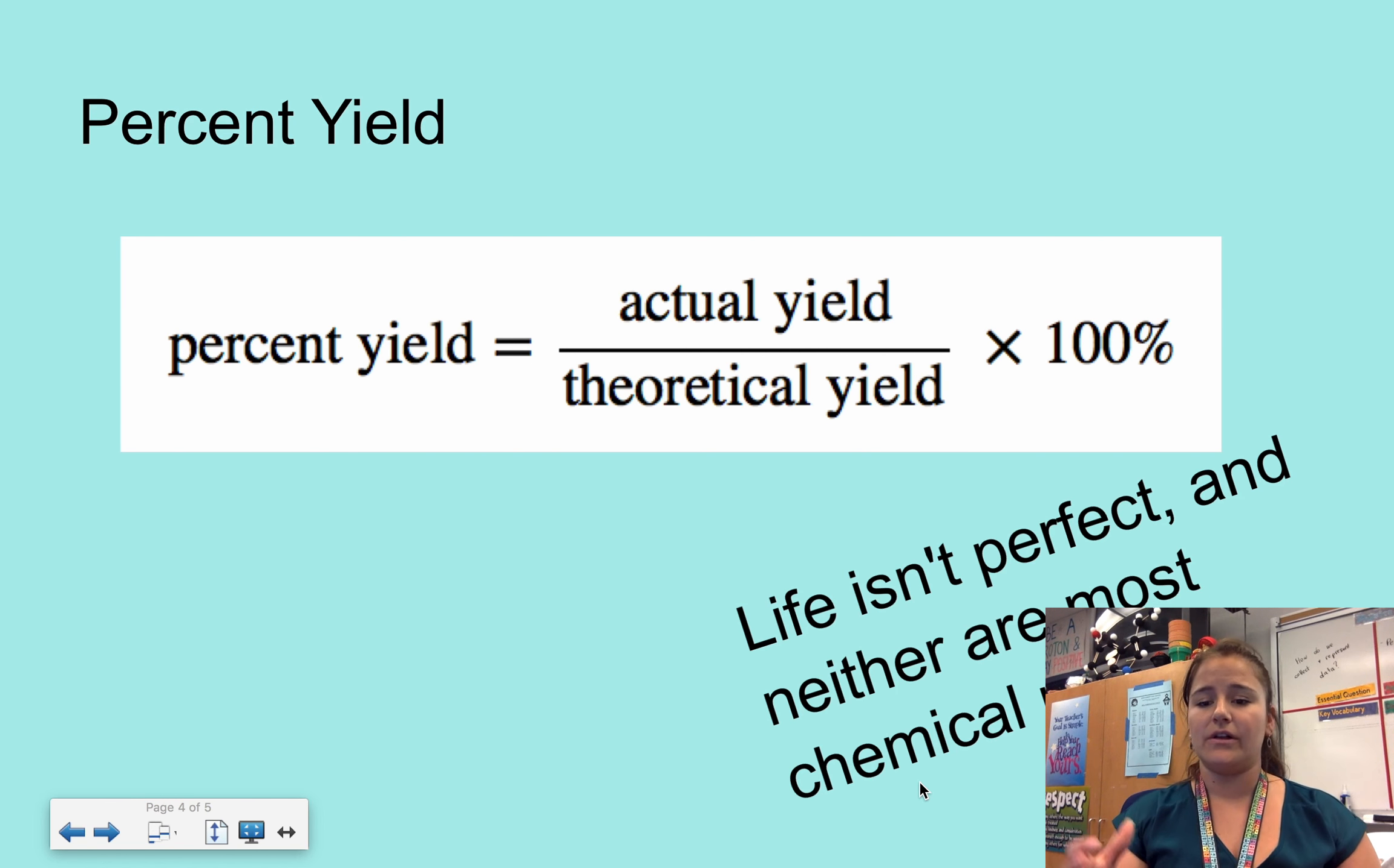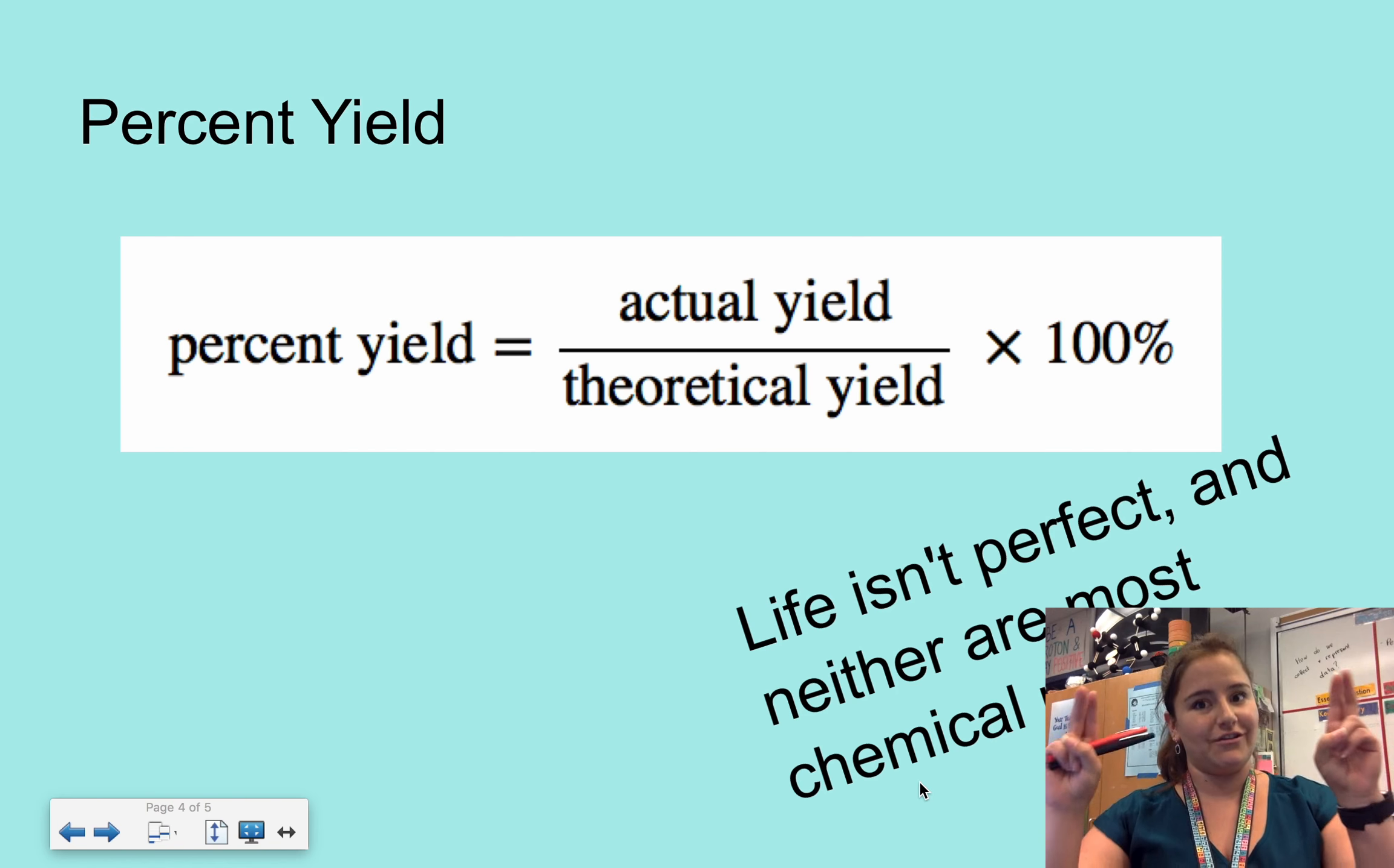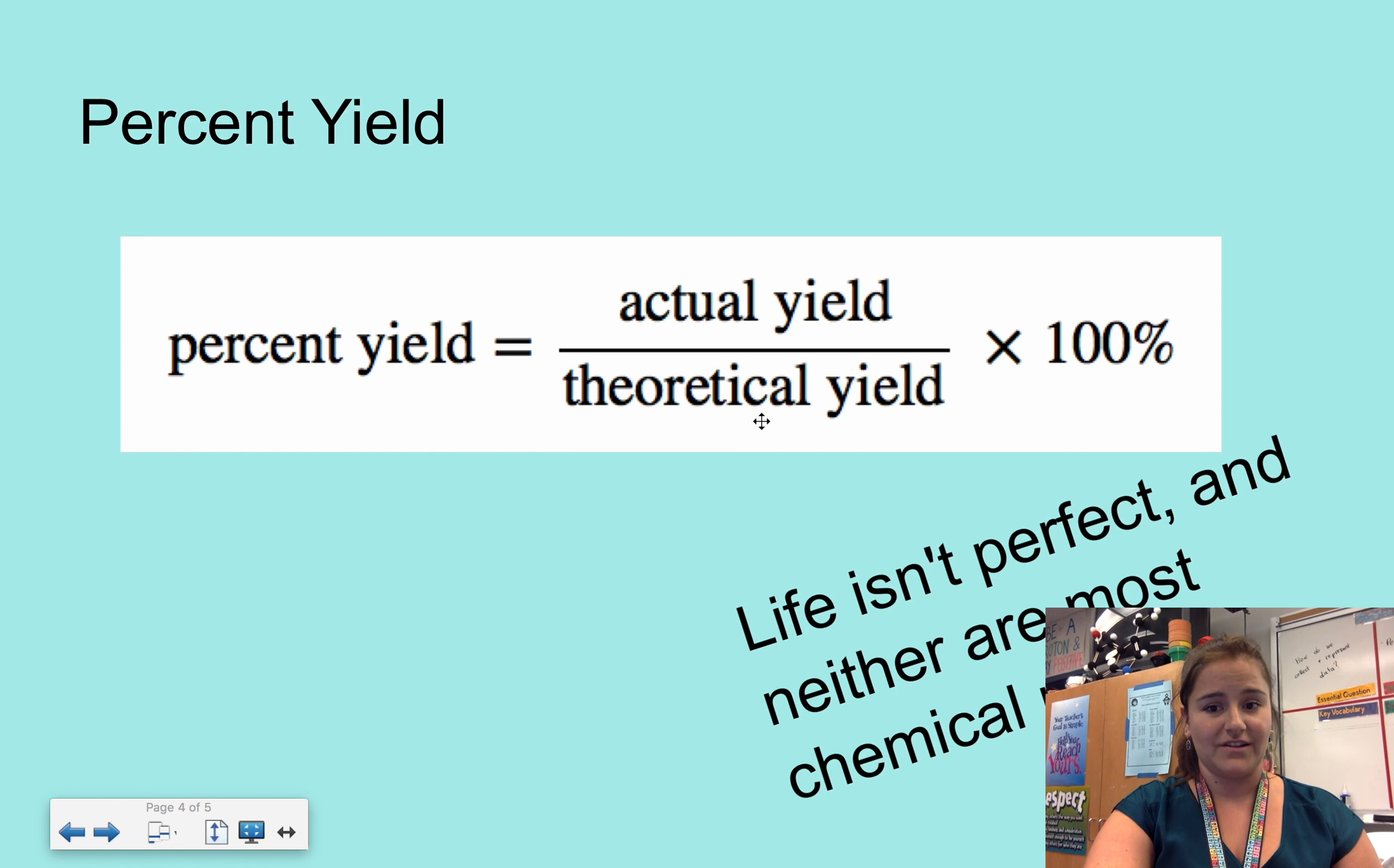Percent yield is very closely related. When we figure out our limiting reactants and we figure out how much product we're going to make, that will tell us our theoretical yields. However, life isn't perfect. Neither are chemical reactions. So our actual yields will most often be a little bit lower than what we expect that we could get based on what we're given. And our actual yield divided by our theoretical yields will give us a decimal. We times it by 100 to get it in percent form, and that we call our percent yield.